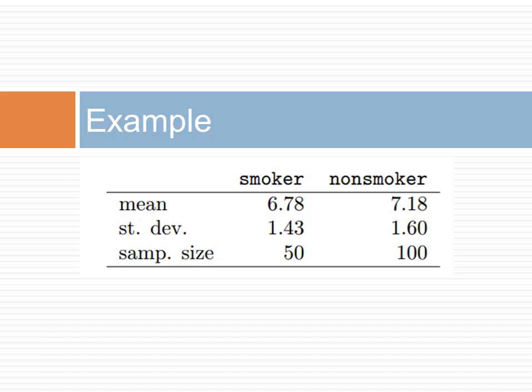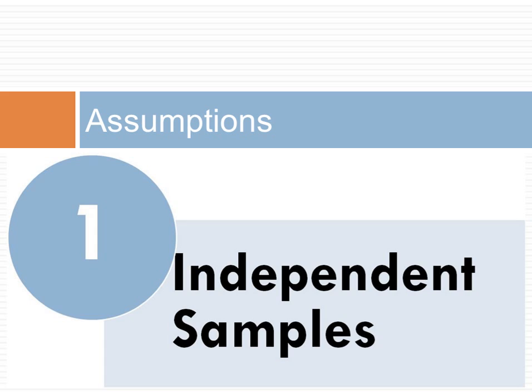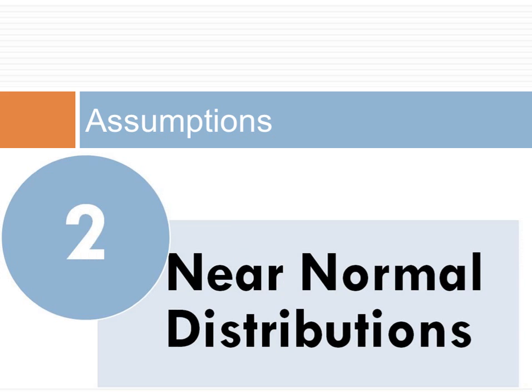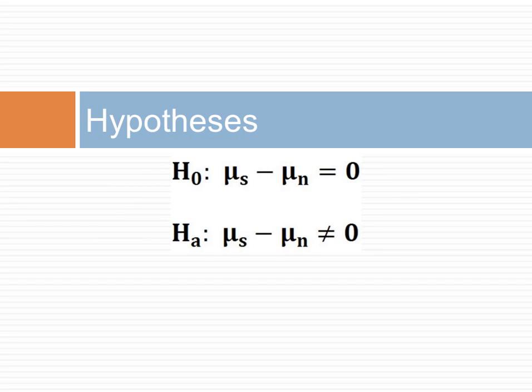Summary statistics are shown here for mothers who smoked and those who did not. Let us go through the steps in our inference framework. First, we check assumptions. Our first assumption was that the samples are independent. There is some evidence that smokers affect non-smokers, especially if they live together. For mothers who do not live together or know each other, the assumption of independence of samples may be reasonable. The second assumption is that both smokers and non-smokers have a near normal distribution. This is verified if the sample size is larger than 30 and not strongly skewed. The sample sizes are 50 and 100, so both are above 30. The sample is skewed, but the skew is not too strong. Therefore, we conclude that at these large sample sizes, the assumption of near normal distribution could be met.